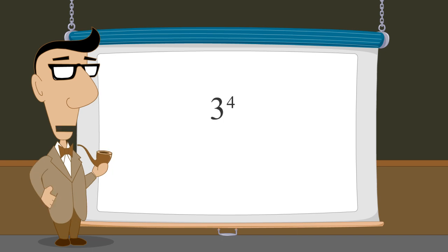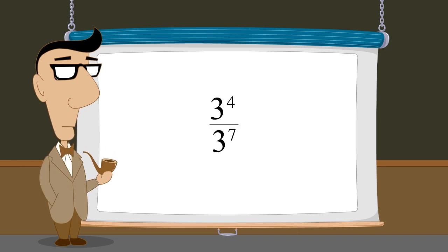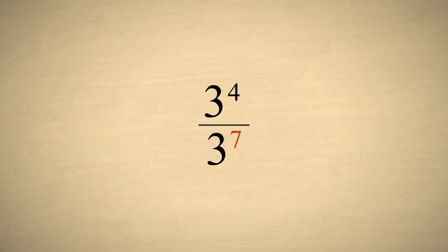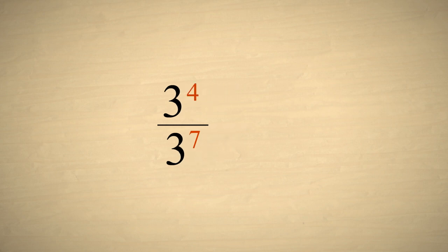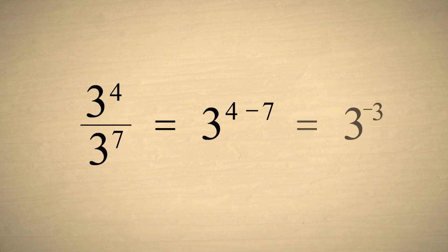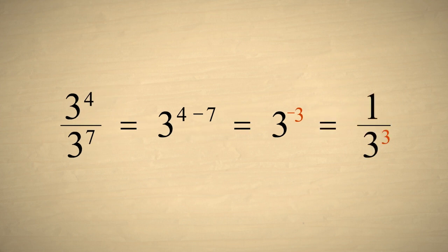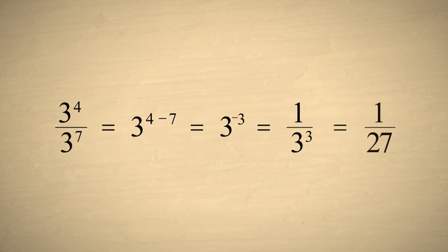Now let's simplify the expression three to the fourth power divided by three to the seventh power. Since the exponent in the denominator is larger than the exponent in the numerator, when we subtract the exponents, we get a negative exponent: three to the negative third power. Remember that a number with a negative exponent is the same as one over that number with the same positive exponent, so we can write three to the negative third as one over three cubed, which is equal to one over twenty-seven.